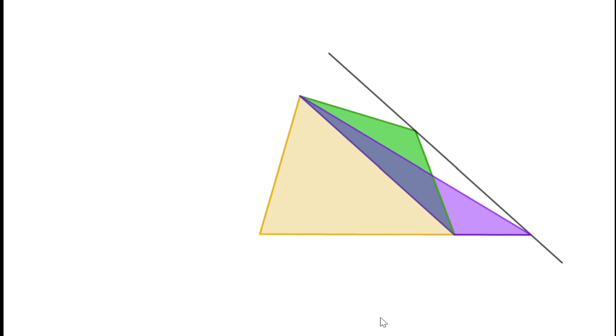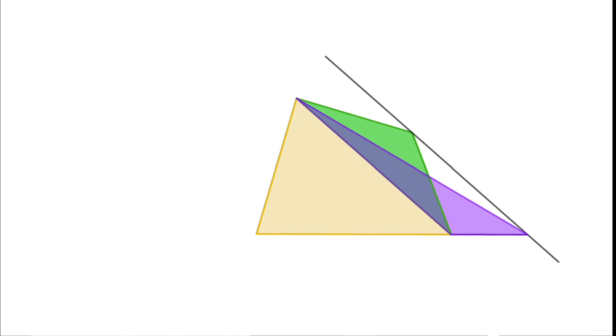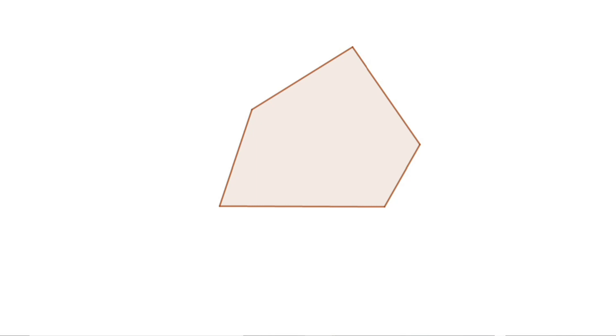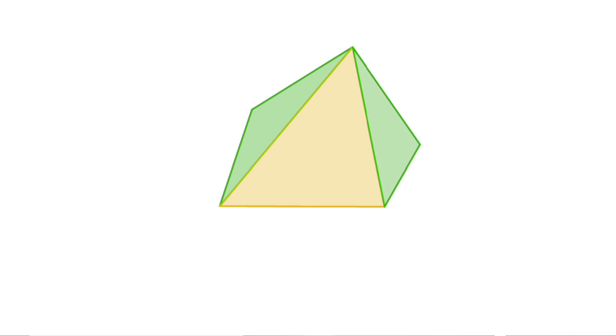Using this idea again and again, we can draw triangles having the same area as other polygons also. Let us see how to draw a triangle having the same area of a pentagon. Draw diagonals to divide the pentagon into three triangles. Keep the middle triangle as it is and convert the other two triangles to form a big triangle without changing the area.